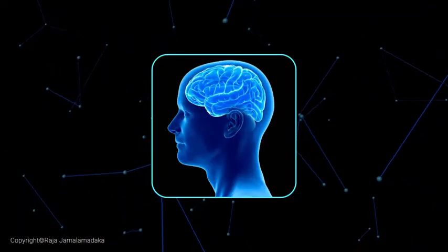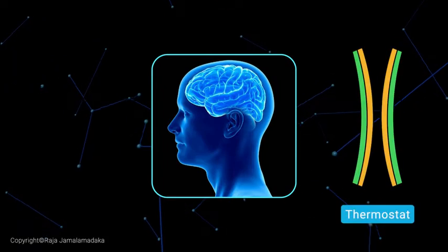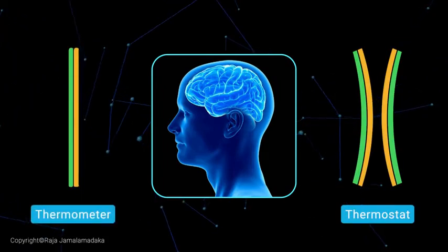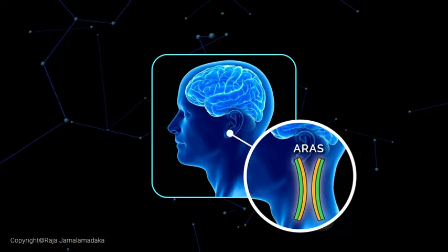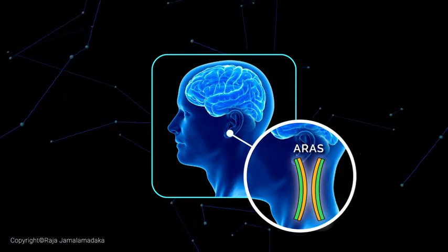The human brain works more like a thermostat than a thermometer. This thermostat is located in the brain's powerful filtering algorithm called the ARAS.